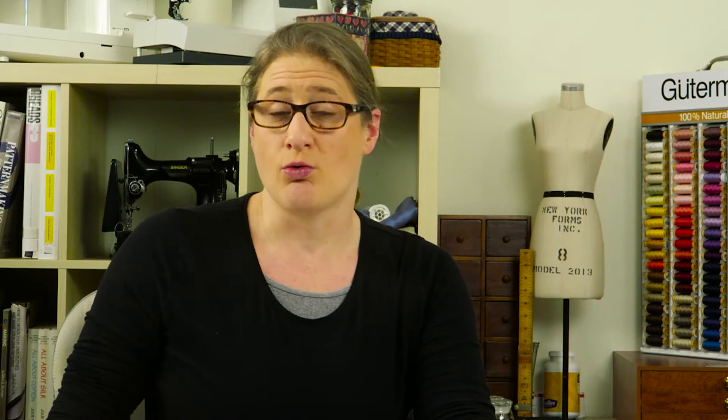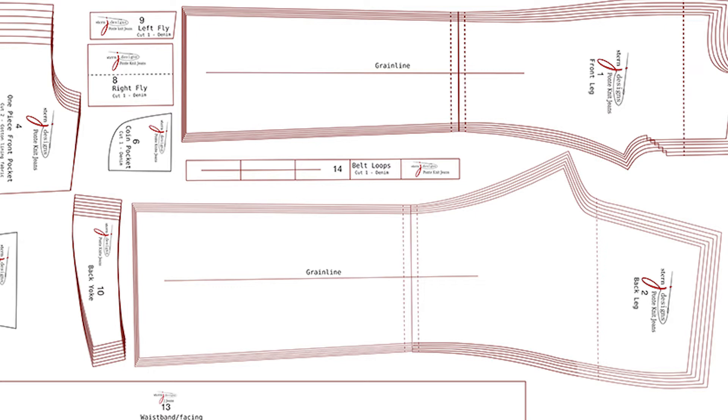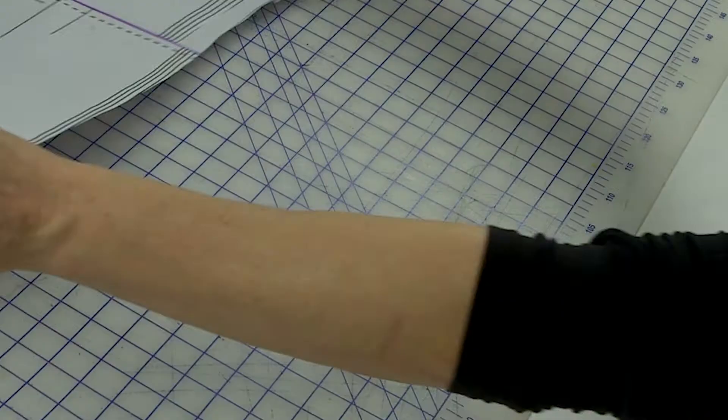The first thing I want to talk about is using a graded nest to make pattern adjustments. When I teach my workshops, I always say don't make adjustments through a graded nest. If you're not sure what a graded nest is, it's the pattern that you get out of the envelope that's multi-sized, so it has all the sizes right next to each other.